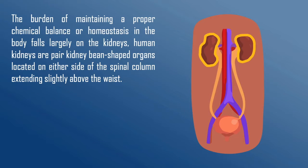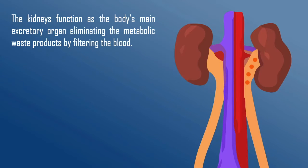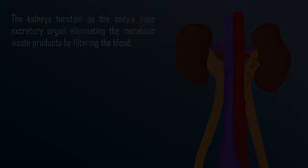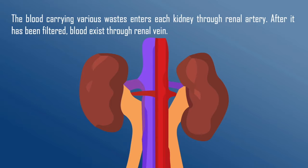Human kidneys are a pair of kidney bean-shaped organs located on either side of the spinal column, extending slightly above the waist. The kidneys function as the body's main excretory organ, eliminating metabolic waste products by filtering the blood. Blood carrying various wastes enters each kidney through the renal artery.